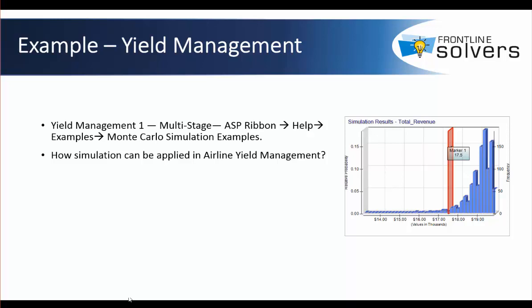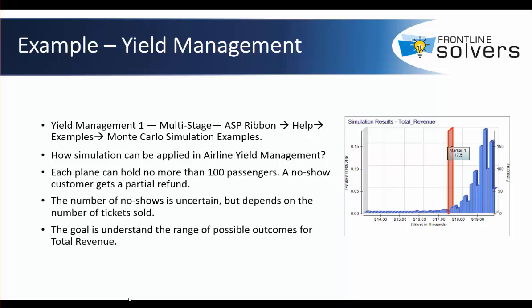Let's look at another example: an airline revenue management application. There are people who have tickets on a flight and will not show up, and airlines like to reuse those tickets on a subsequent flight. There is always an incentive for airlines to overbook a flight, and here we are looking to understand the range of possible outcomes for total revenue given what can happen with no-shows.